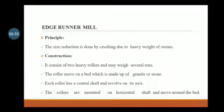Then lastly, Edge Runner Mill. Principle: Size reduction is done by crushing due to high heavy weight of stones. Construction: It consists of two heavy rollers that may weigh several tons. The rollers move on a bed which is made up of granite or stone. Each roller has a central shaft and revolves on its axis.